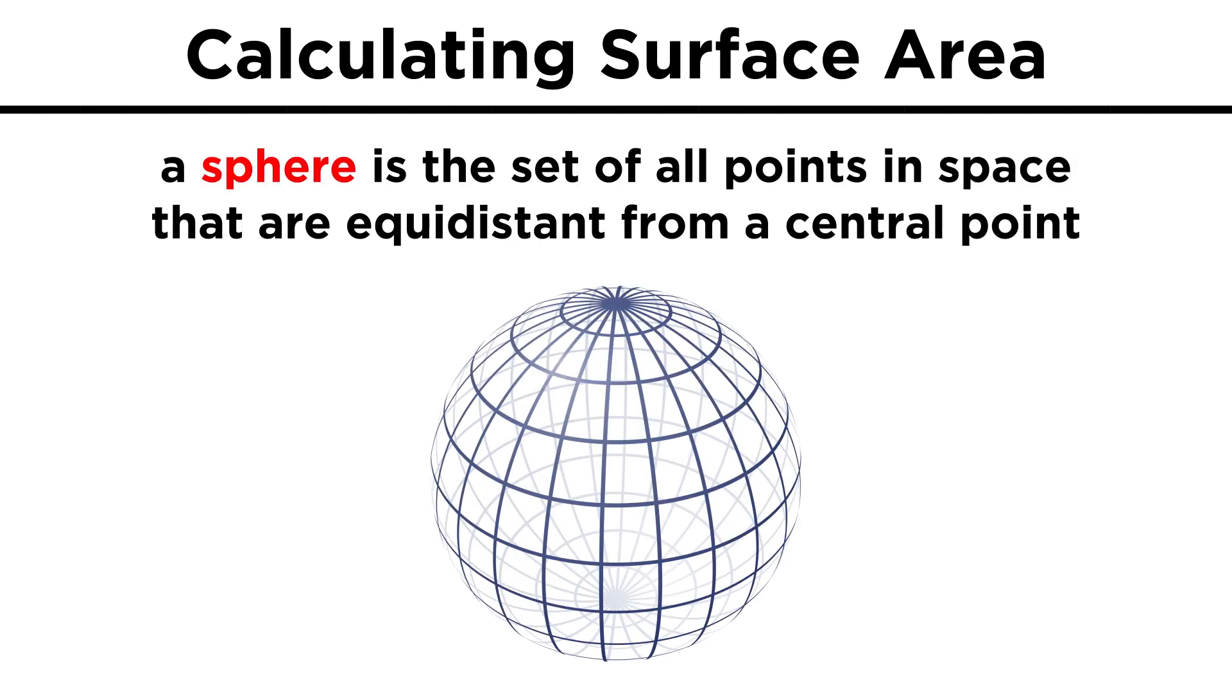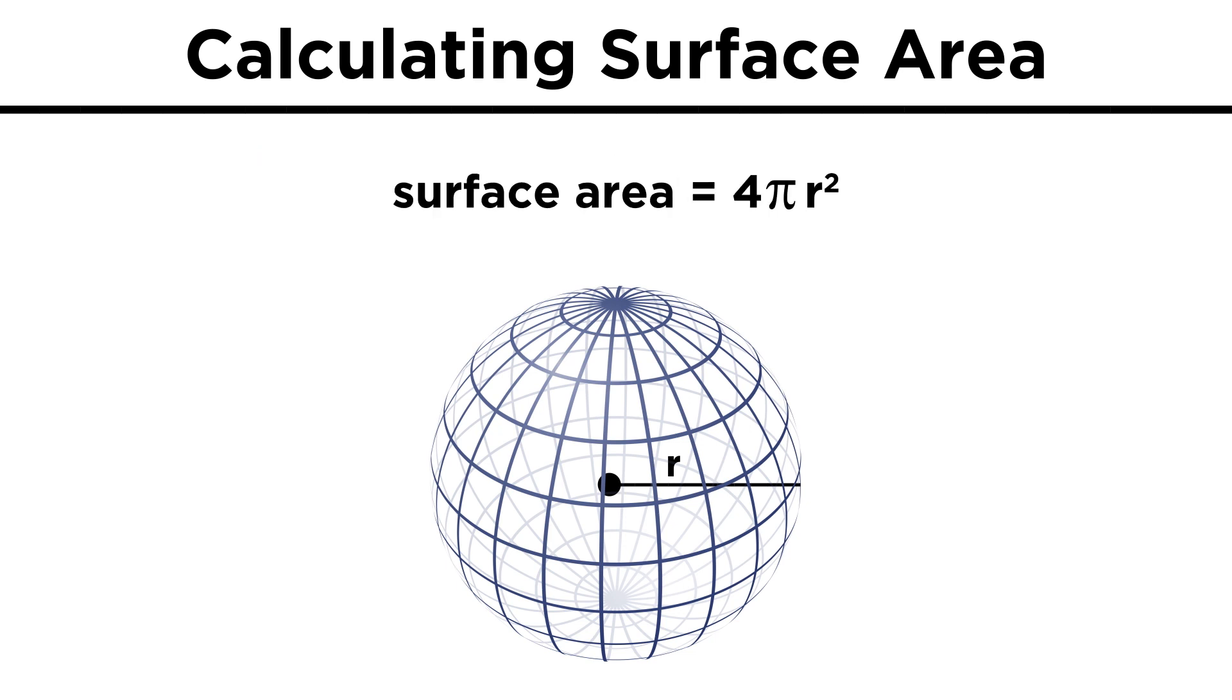Lastly, let's find the surface area of a sphere, which is the set of all points in space, that are a fixed distance from a central point, with that distance being the radius of the sphere. The surface area of a sphere is given by four pi R squared, so with a radius of five, that would be twenty-five times four is one hundred, times pi is one hundred pi square meters.